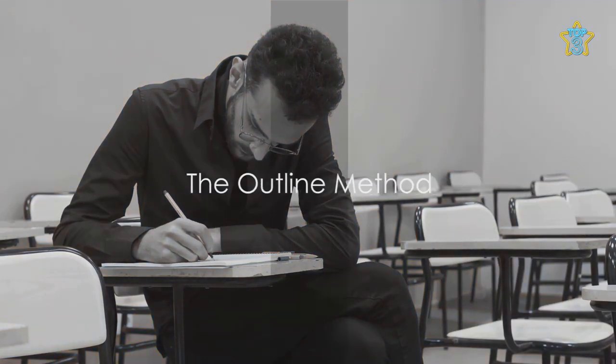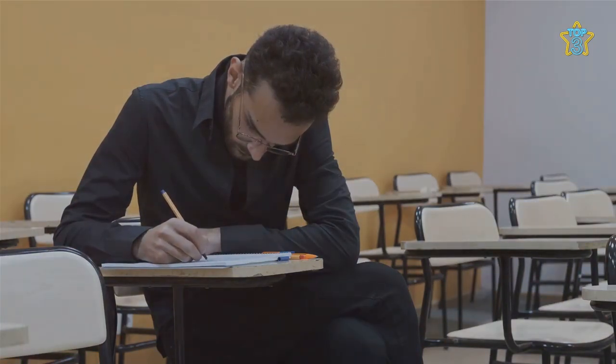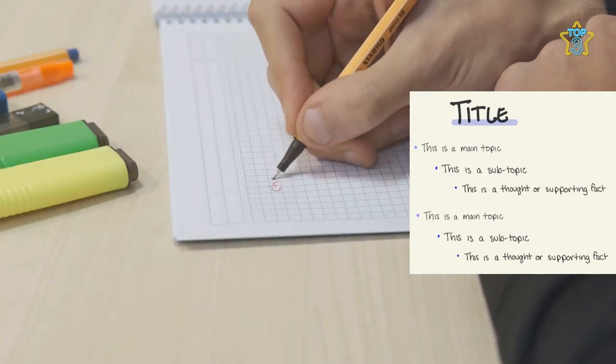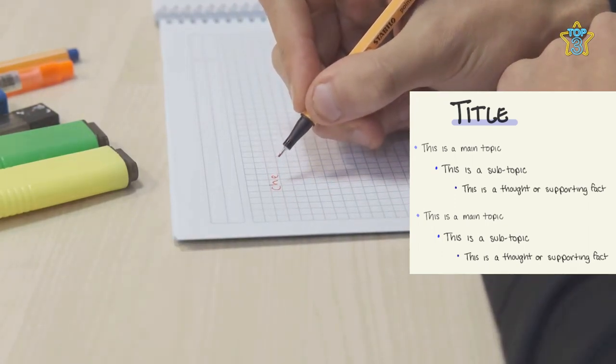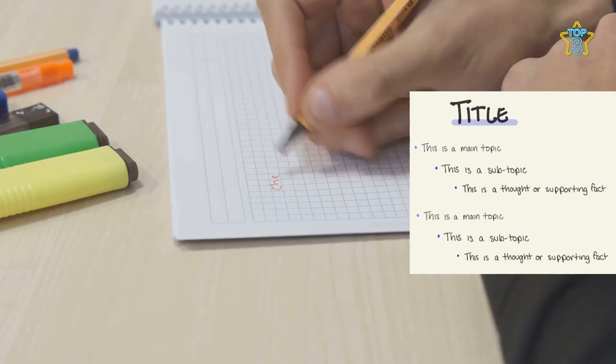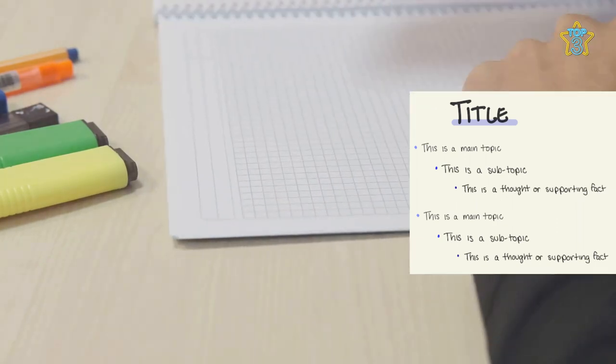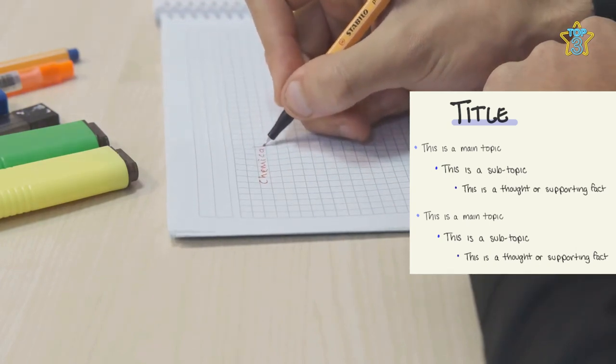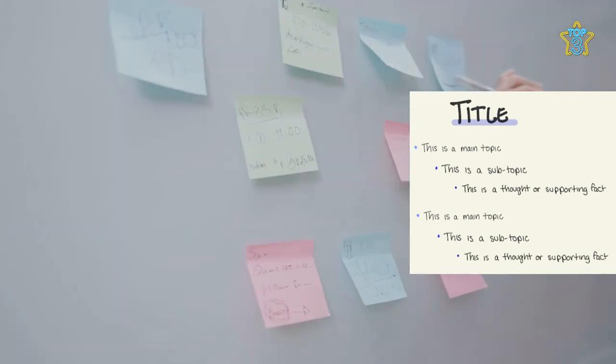If the Cornell method seems a bit too structured for your taste, you might prefer the outline method. It's like creating a roadmap of your thoughts, a hierarchical structure that neatly arranges your main topics, subtopics, and supporting details. You start with a broad concept at the top, and then you branch out, adding layers of detail as you delve deeper into the topic.